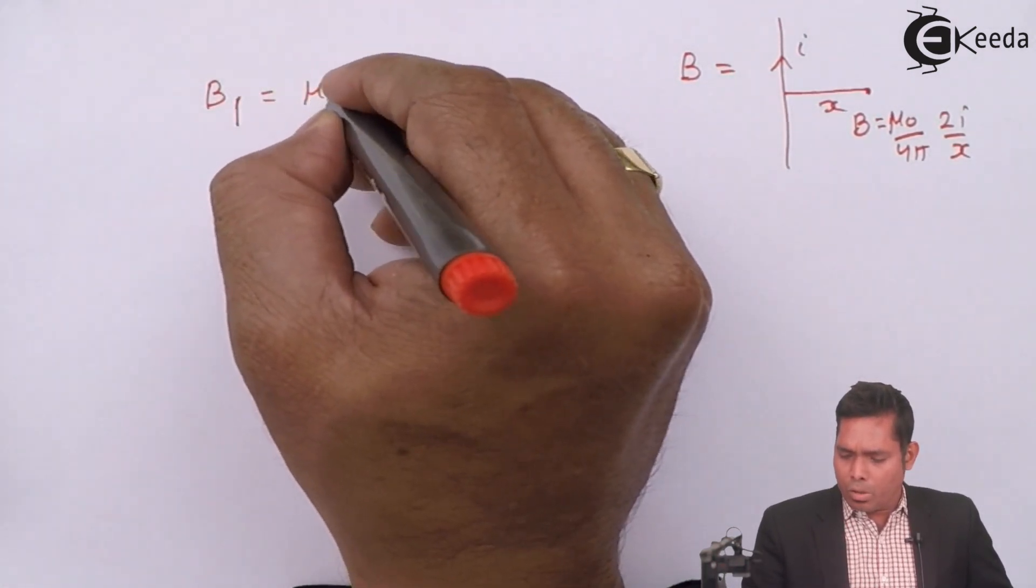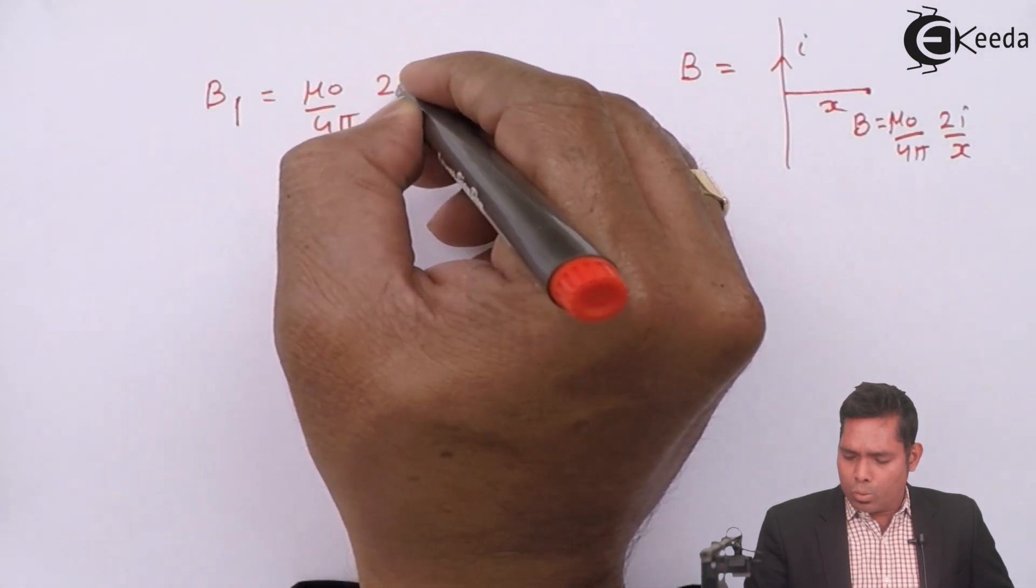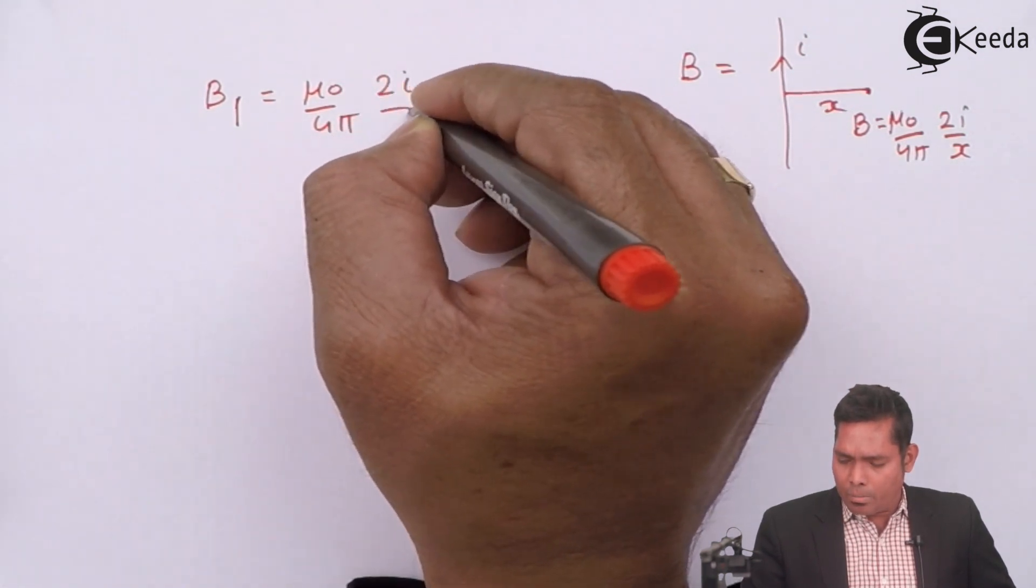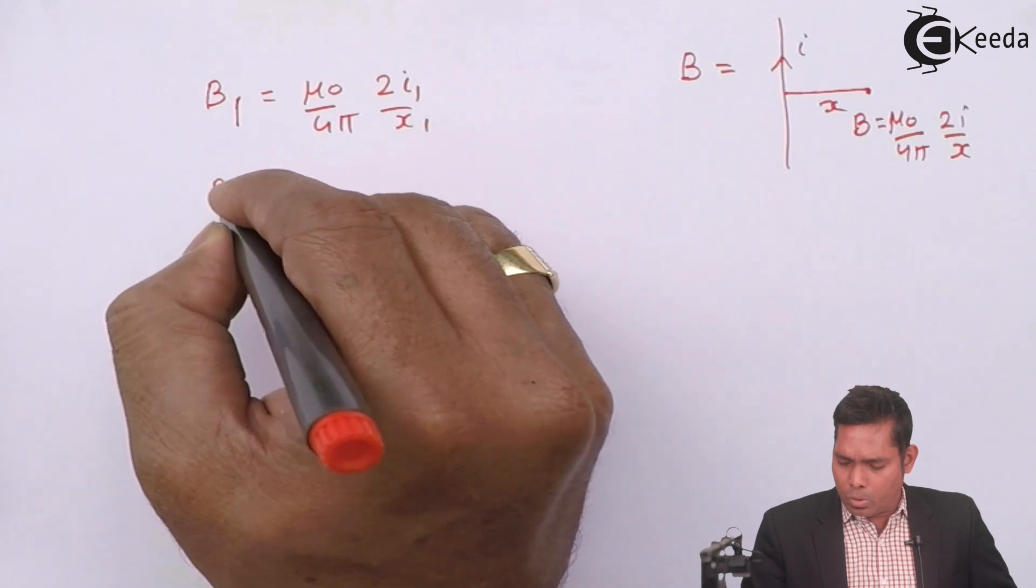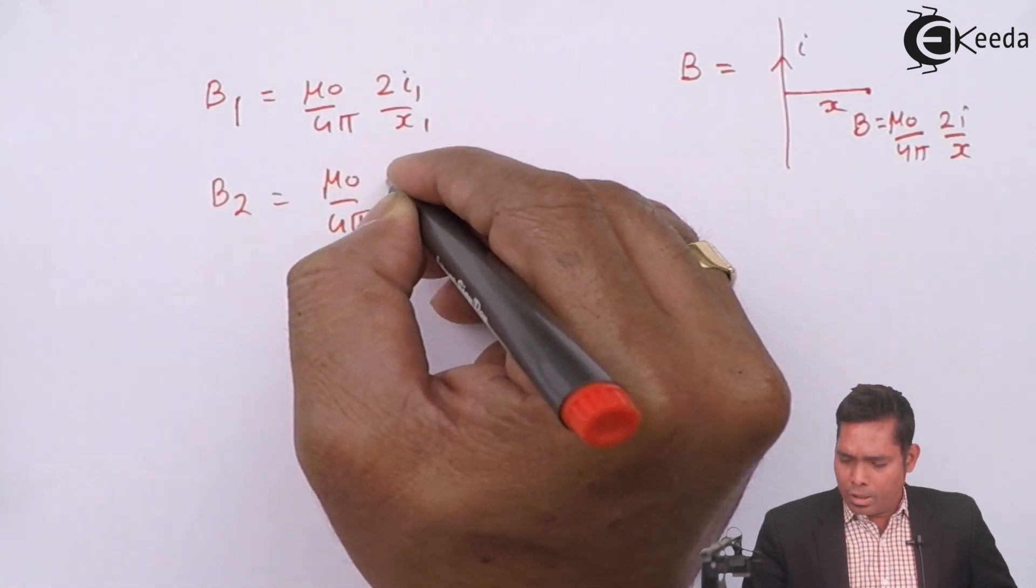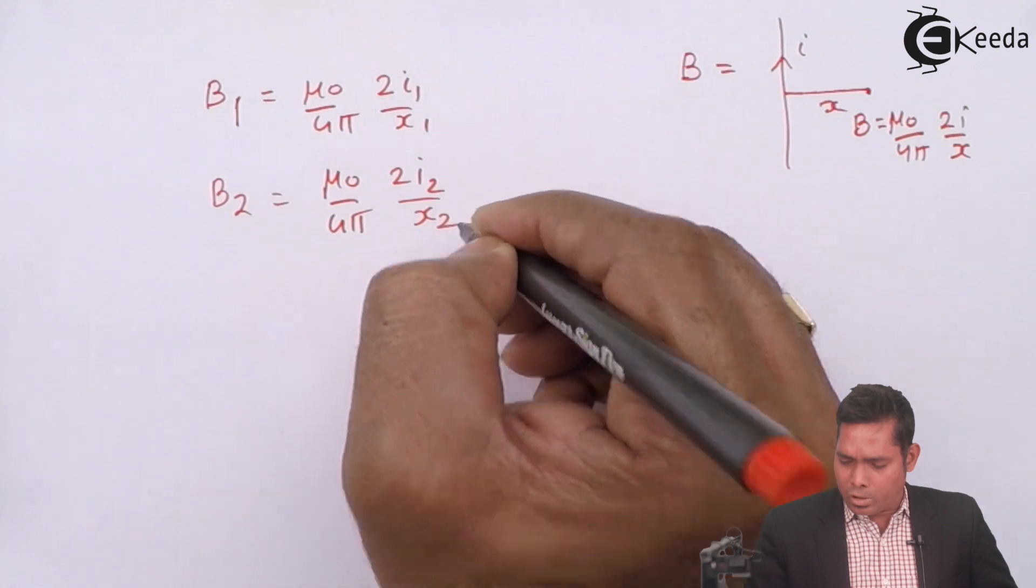B1 is mu 0 upon 4 pi 2 i1 by x1. B2 is mu 0 upon 4 pi 2 i2 upon x2.